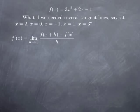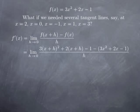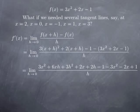We substitute for f of x plus h and for f of x their values — replacing x by x plus h in the expression for f to obtain f of x plus h, and keeping 3x squared plus 2x minus 1 for f of x. Multiplying things through: x plus h squared gives x squared plus 2xh plus h squared, so multiplying by 3 gives 3x squared plus 6xh plus 3h squared; and 2 times x plus h gives 2x plus 2h. Distributing the negative sign, the terms in x squared cancel out, the terms in x cancel out, and the constant terms cancel out.